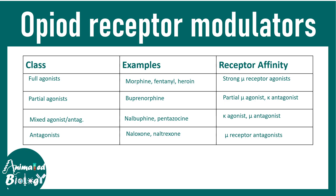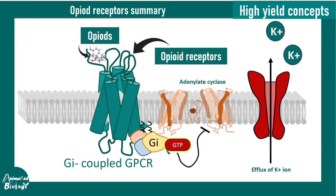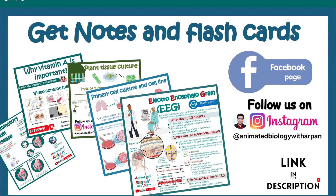This is a quick summary and overview. In this video we understood how, at a molecular level, opioid receptors can modulate the pain pathway. I hope this was useful.